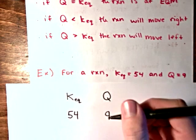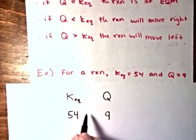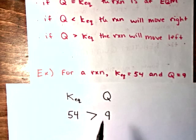And then we evaluate. We look to see which one is larger. Well, 54 is larger than 9. So we write in our greater than sign like that.